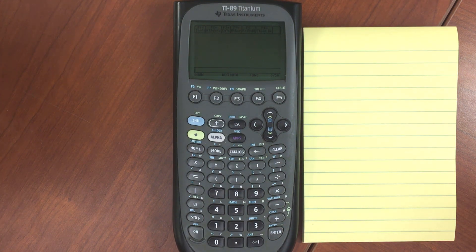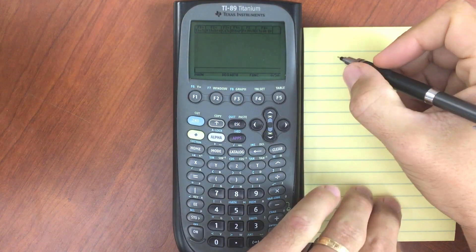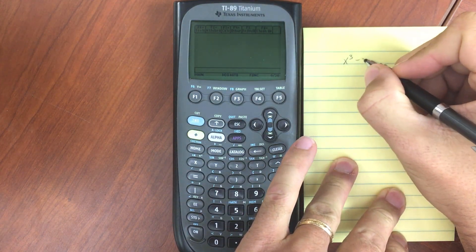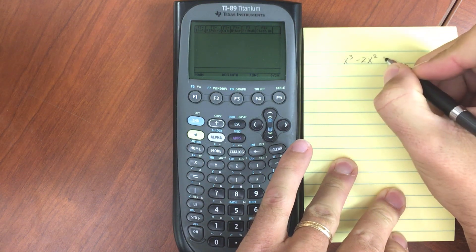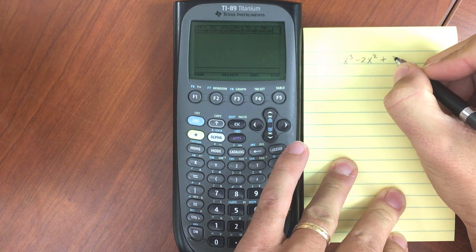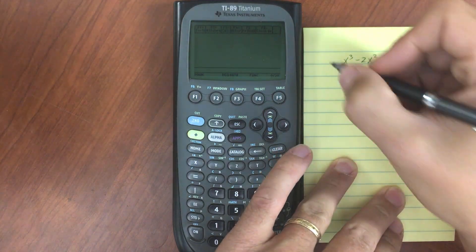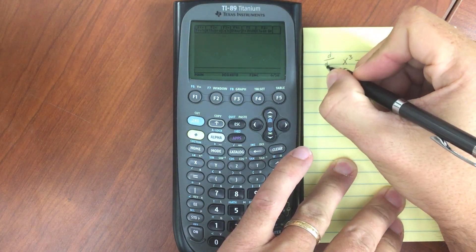Now let's play around a little bit with calculus. Say we have something like x to the third minus 2x squared plus 5x minus 3, and we want to take the derivative of this with respect to x.